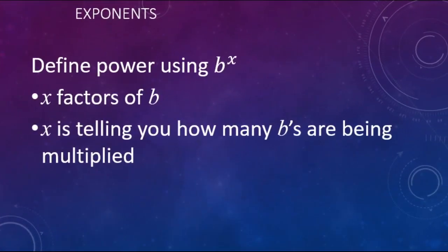Let's start out by going back over what a power is. So if we have b to the x, that means we have x factors of b. Another way of saying that is that this x, this exponent, is telling you how many b's you are having and they're being multiplied.